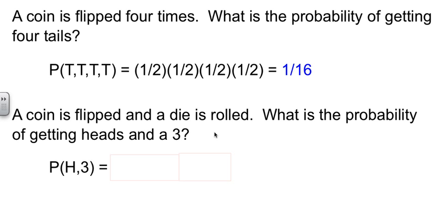Well, what happens on the coin has no effect on what happens on the die. So the probability of heads is one out of two. The probability of getting a three on the die is one out of six. So that makes a one out of twelve when you multiply.